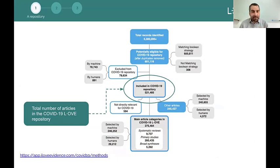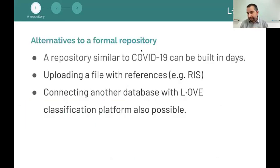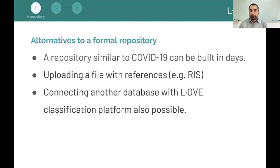The system is systematic, so you can see at any stage how many records have been retrieved, whether records have been excluded by a machine or a human screener, and how all records have gone through different stages to enter the repository. This first component can be built for other topics very easily — of course resources are implied, so we haven't built repositories for all topics, but we think the process can be reproduced very easily in other areas.